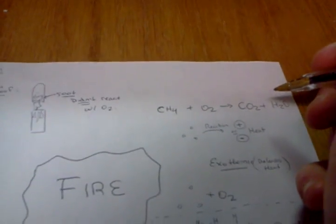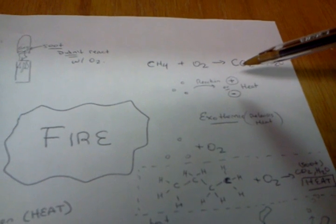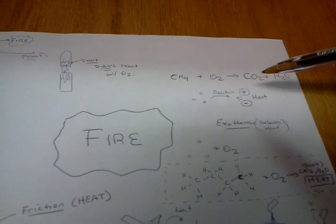Now this is something called an exothermic reaction. Exothermic means that it releases heat. So when these molecules are reacting with each other, not only does it produce these products, carbon dioxide, carbon single carbon, and two oxygen dioxide, and water, but it also produces a lot of heat.